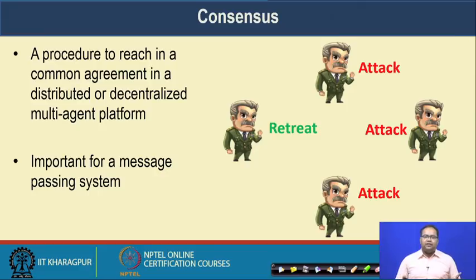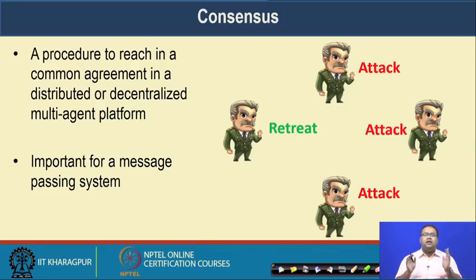In this example, three generals are making a choice towards attack. So with the majority principle, the system can come to a consensus that they should make an attack collectively.